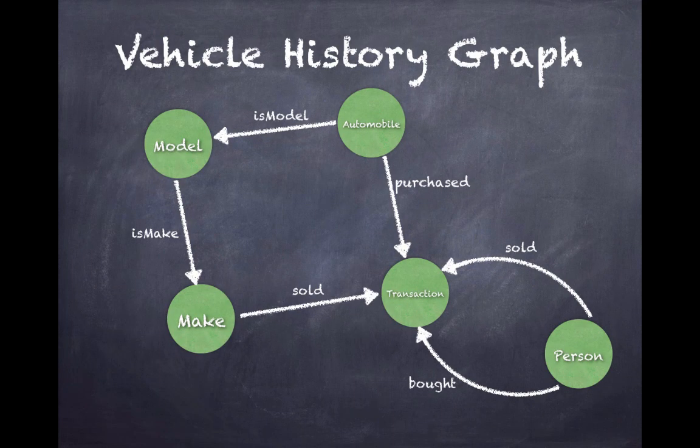The schema for vehicle history graph looks something like this. We've got automobiles related to models by the isModel edge. A model is make. A make is sold in a transaction. An automobile is purchased in a transaction. And a person can sell a transaction using the sold edge, or we can see if a person bought a car in a transaction using the bought edge.